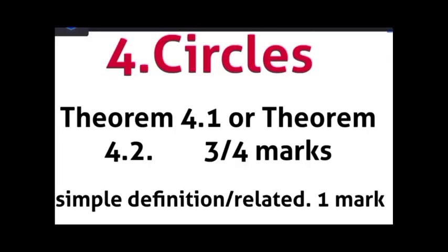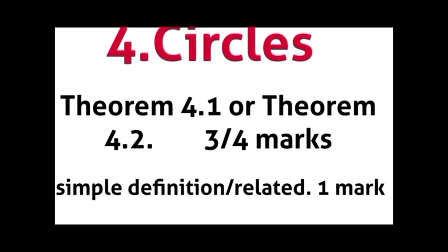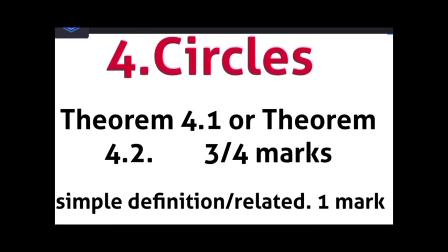Coming to the fourth chapter, Circles: in your book there are two theorems, 4.1 and 4.2. Either one will come for three or four marks. Simple definitions or related simple questions carry one mark. Total four to five marks will come from the circles chapter.